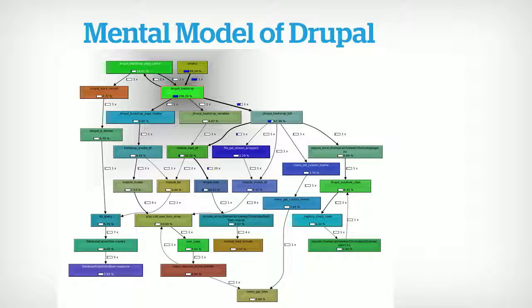This is a Drupal 7 bootstrap flowchart. Somewhere at the top is a request, somewhere at the bottom is the response, and there's a lot going on. Every single one of those blocks probably has another graph that looks exactly like this behind it. It's kind of a knot. We have to start picking apart and understanding the different pieces of Drupal before we can really debug it.